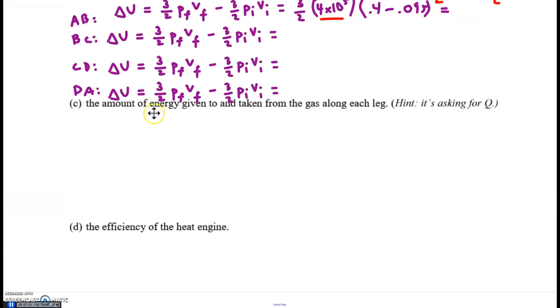Find the amount of energy. They're always referring to heat energy. If they say given to, taken from, you'll also see the word transferred. That's a clue that they want to talk about heat energy. Energy is Q. Consider each leg one at a time: AB, BC, CD, DA.